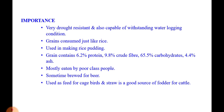This crop is very drought resistant and also capable of withstanding waterlogging conditions. Grains are consumed just like rice and used in making rice pudding. Grains of barnyard millet contain 6.2% protein, 9.8% crude fiber, 65.5% carbohydrates, and 4.4% ash. It is mostly eaten by poor class people, sometimes brewed for beer, used as feed for cage birds, and the straw is a good source of fodder for cattle.